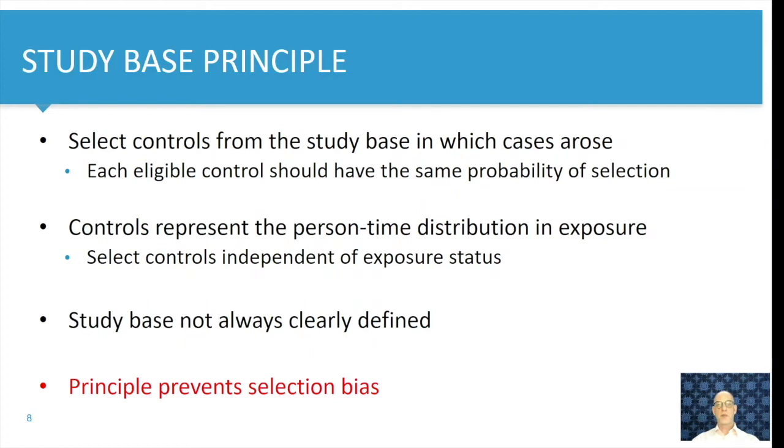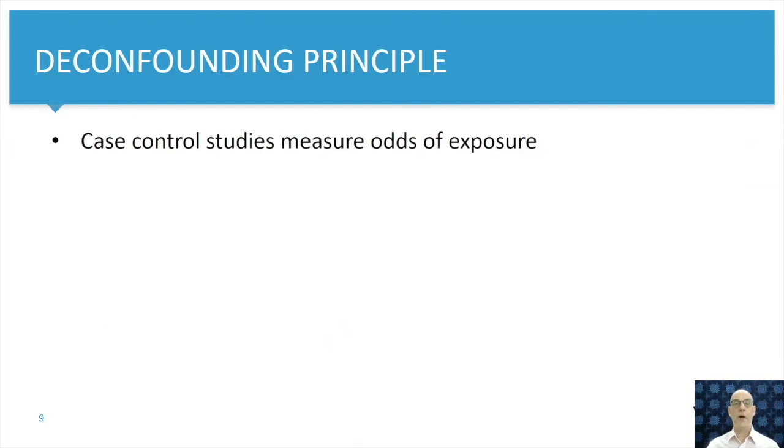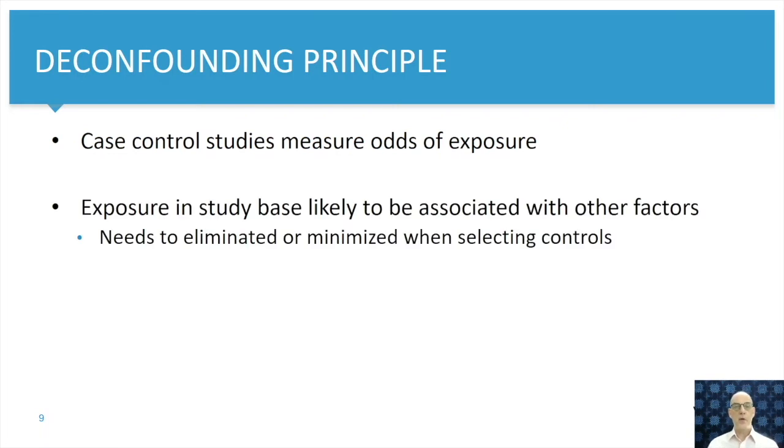The study base principle deals with preventing selection bias of your study. And then the de-confounding principle. In a case control study, we measure the occurrence of exposure in our cases and controls. But exposures can be related to a large number of other factors. So if we do not take care of these other factors, the association between exposure and outcome in our study will be biased. So we have to do everything possible to minimize the effect of other variables on exposure-outcome relationship.